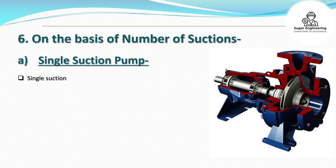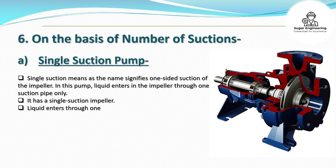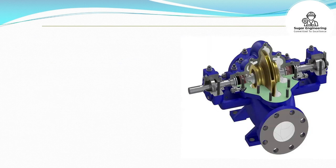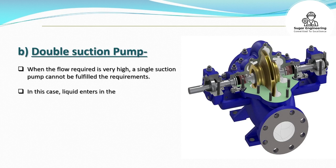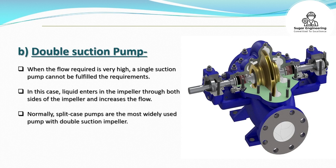On the basis of number of suctions: A. Single suction pump — single suction means one-sided suction of the impeller. Liquid enters the impeller through one suction pipe only. It has a simple design but can have higher axial thrust due to imbalance of flow coming in from only one side. B. Double suction pump — when the flow required is very high, a single suction pump cannot fulfill the requirements. In this case, liquid enters the impeller through both sides, increasing the flow. Split case pumps are the most widely used pumps with a double suction impeller.